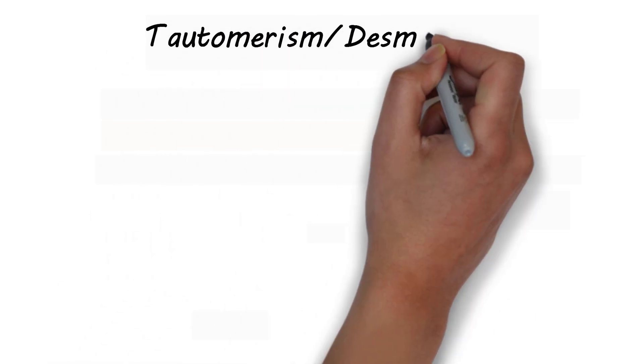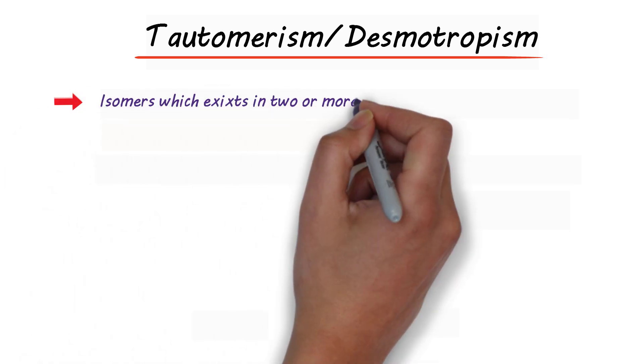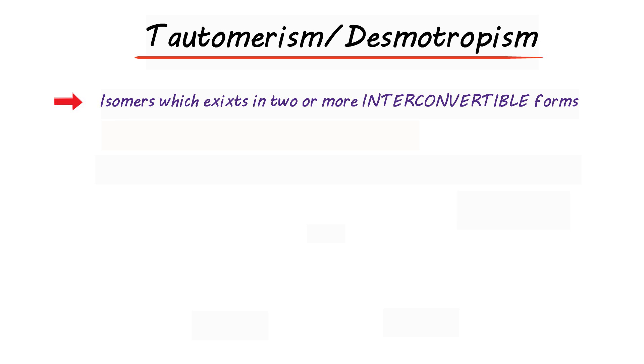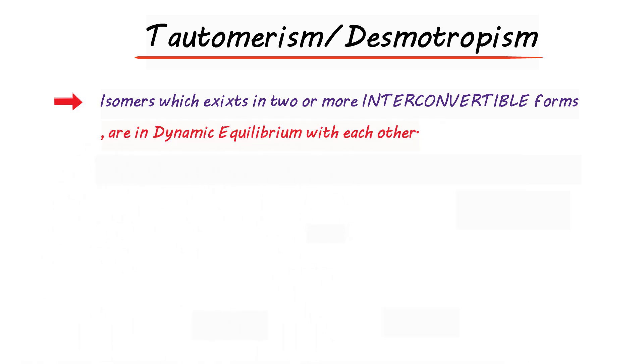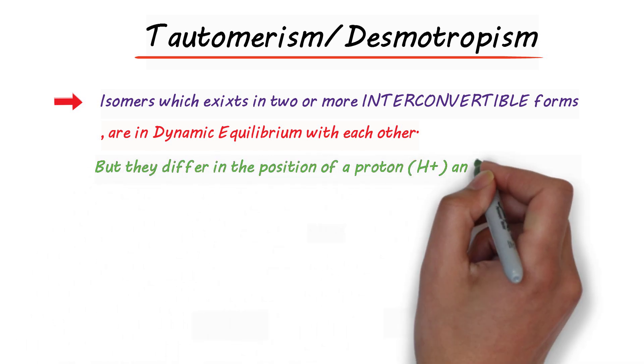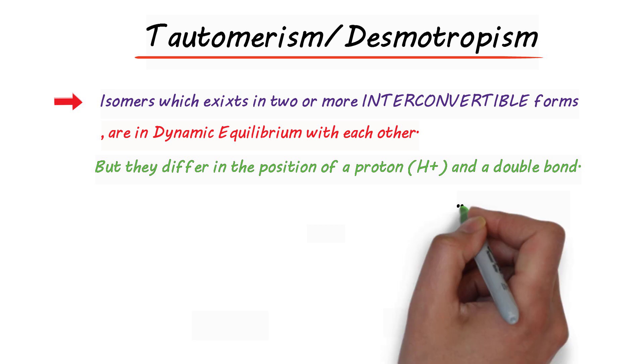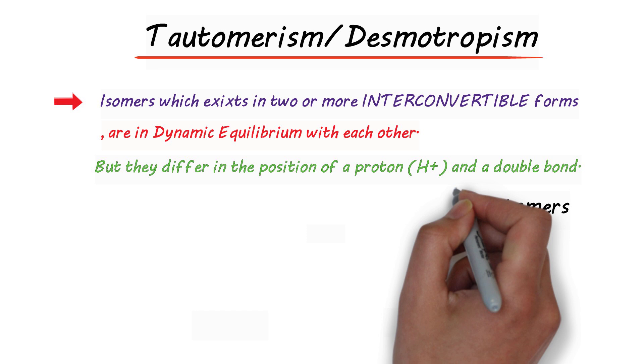Welcome back. Let's talk about tautomerism or desmotropism. Isomers which exist in two or more interconvertible forms are in dynamic equilibrium with each other, but they differ in the position of a proton (H+) and a double bond. Such isomers are called tautomers or desmotrops.